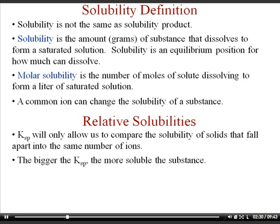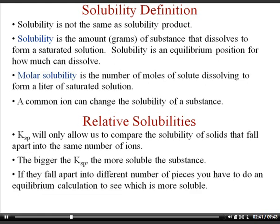For example, sodium chloride breaks into two ions and potassium chloride also breaks into two ions — whichever has the larger K value dissolves more. But if two salts break apart into a different number of ions, you have to actually calculate the X value using an ICE box. X is essentially the molar solubility of the salt. So if you're comparing sodium chloride to magnesium chloride, sodium chloride splits into two pieces while magnesium chloride splits into three ions, so you'd need to solve for X in the ICE box and then compare those values.